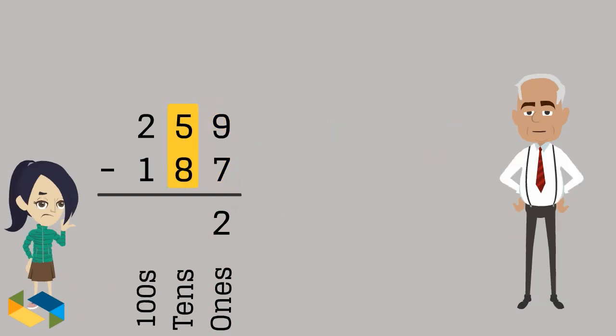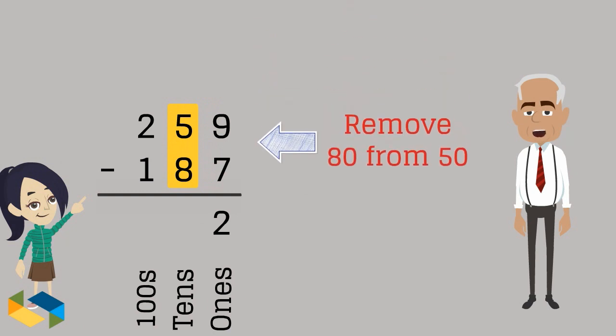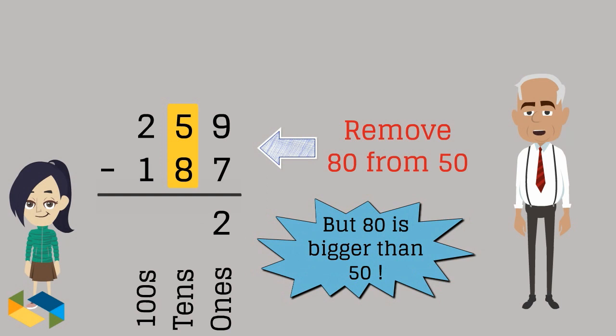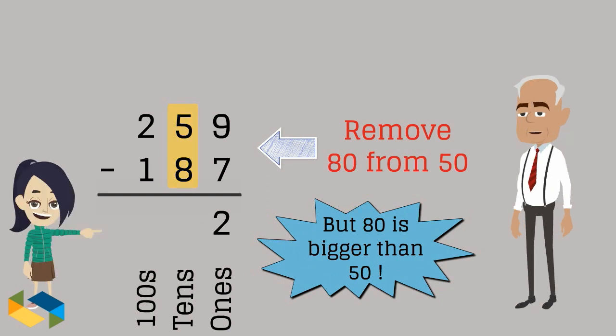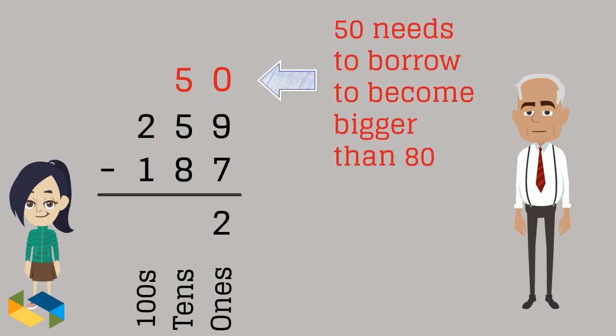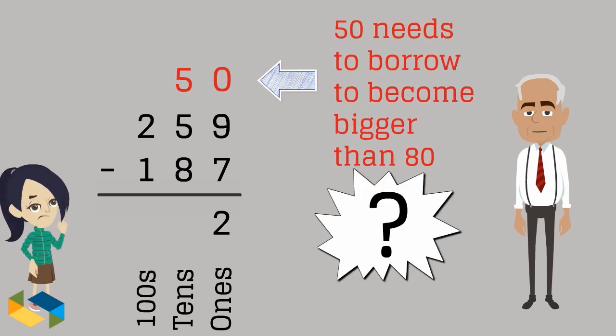At the tens place, we have to remove 80 from 50. So 50 needs to borrow to be bigger than 80. But where does it borrow from and how much?